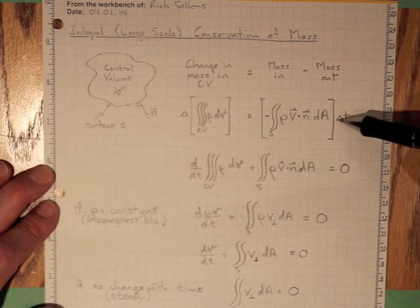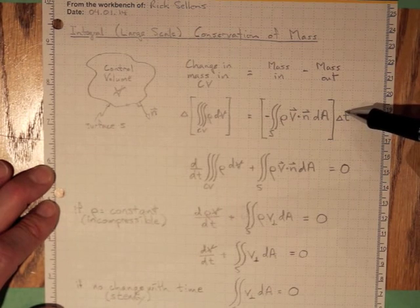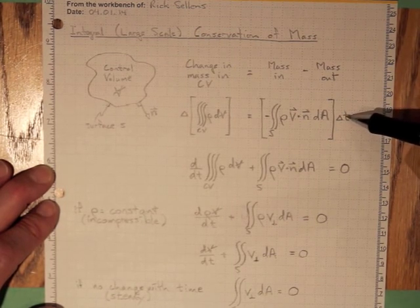This will have units of mass per unit time, so we'd have to multiply that by delta t to find out how much mass actually went in in some short time delta t.